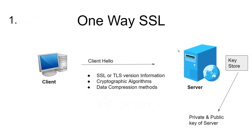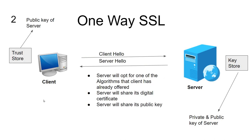This is the first step. Now the second step: the client has sent the request and the server has to respond. The server opts for one of the algorithms the client offered, shares its digital certificate, and shares its public key. The concept of trust store now comes in — the server's certificate and public key have to be accepted by the client and stored in its trust store.